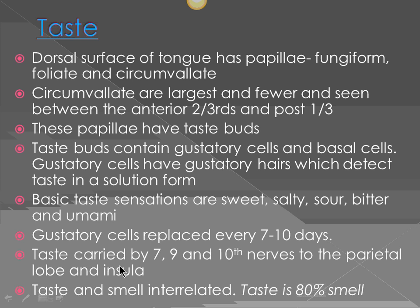On the surface of the tongue, the actual receptors responsible for taste are projections known as papillae. There are three main papillae which have taste buds in them. Taste buds are the main receptors — the ones which help you perceive taste. These three types are: fungiform, which are mushroom-like; foliate; and circumvallate, which are more rounded papillae.